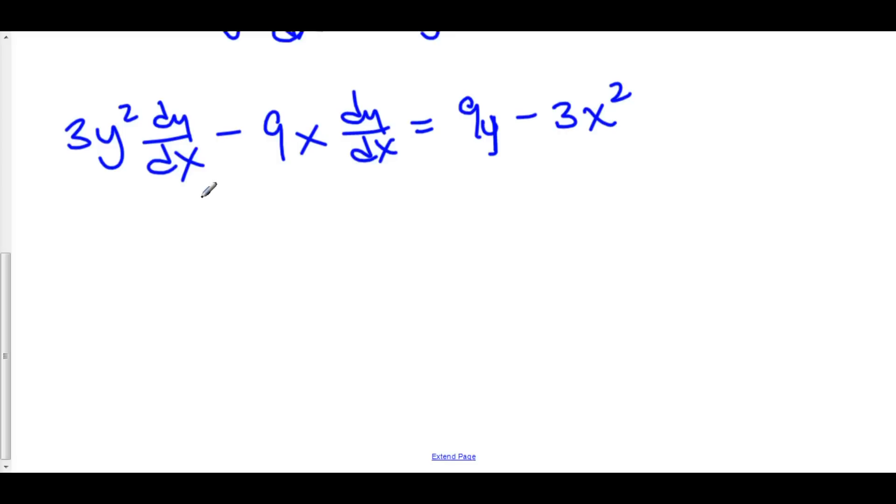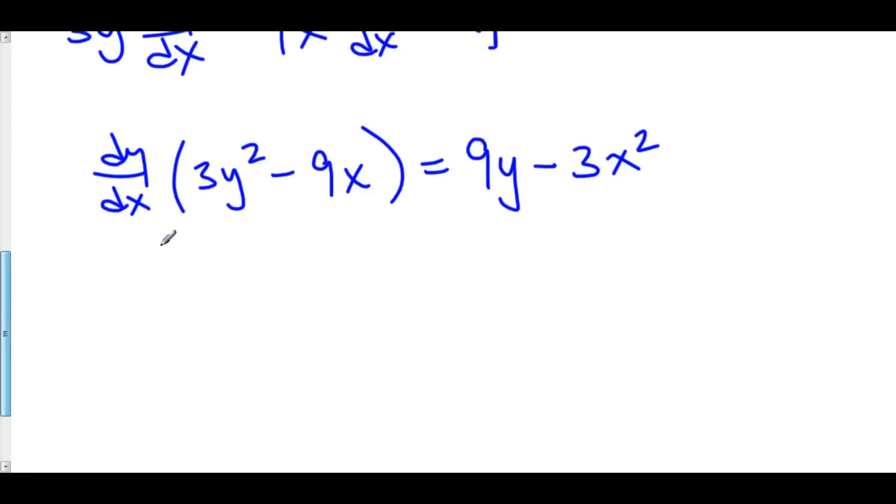Now we can factor out a dy/dx so that we can get it as a product of two things. And therefore get it alone. So here we have dy/dx quantity 3y squared minus 9x is equal to 9y minus 3x squared. And finally, we can divide by 3y squared minus 9x. And dy/dx is equal to 9y minus 3x squared over 3y squared minus 9x.